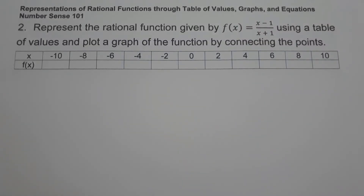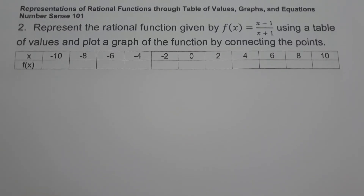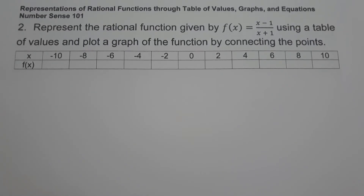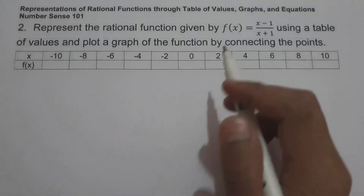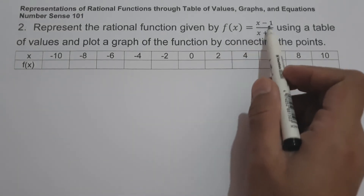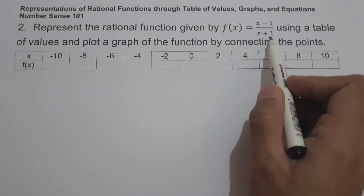For example number 2, represent the rational function given by f(x) = (x − 1) over (x + 1) using a table of values, and plot a graph of the function by connecting the points. We have different values of x, and all we have to do is complete the table of values using the function f(x) = (x − 1) over (x + 1).